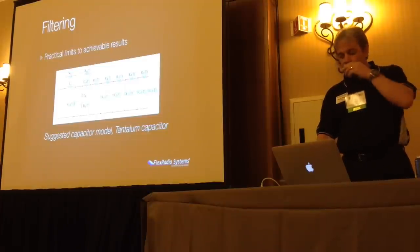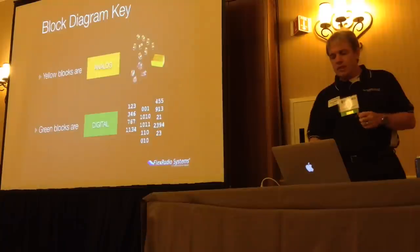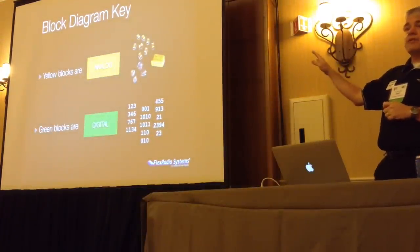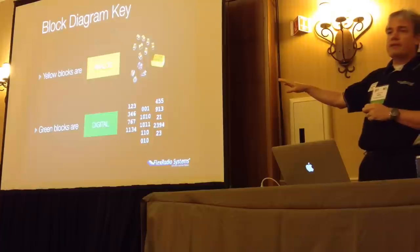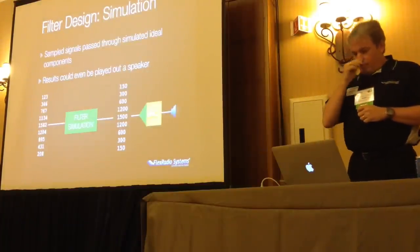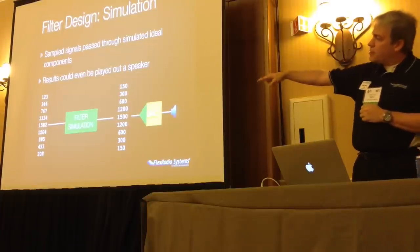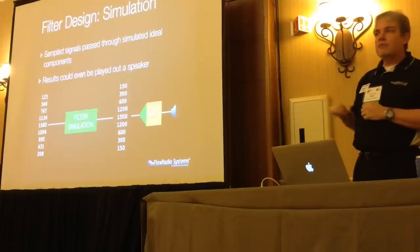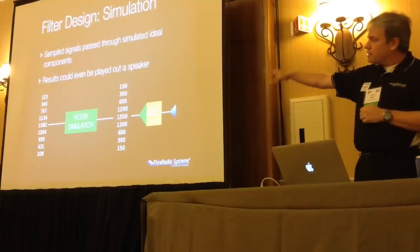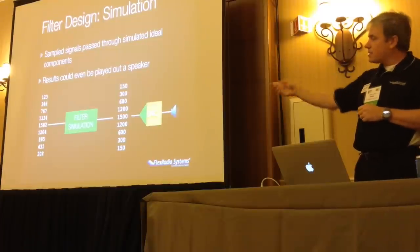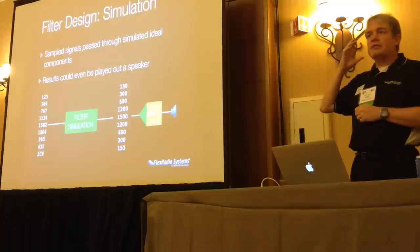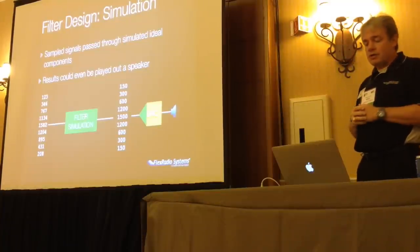Let's go back into the world of radio. In my block diagram I'll use yellow for analog things and green for digital things — ones, zeros, and computer stuff. When we simulate a filter, we take a bunch of numbers representing the time response of a signal, run it through software that does a filter simulation, it outputs a new set of numbers, and we might put those into a digital-to-analog converter and listen to it on a speaker to ask: did that filter do what we thought it was going to do?